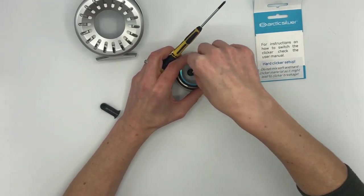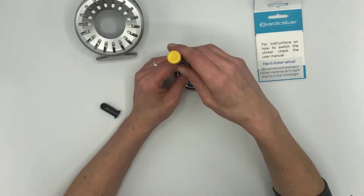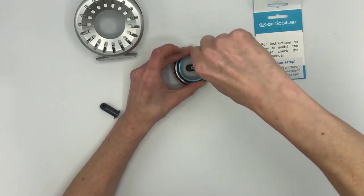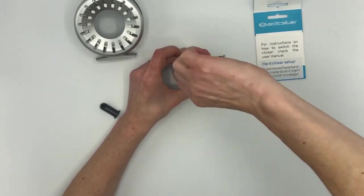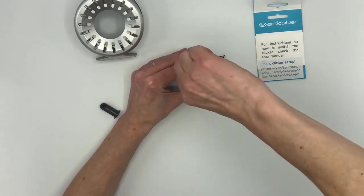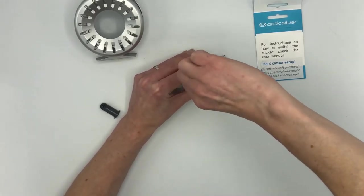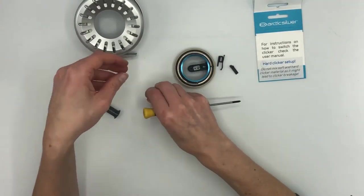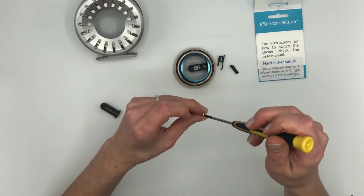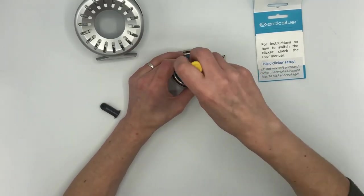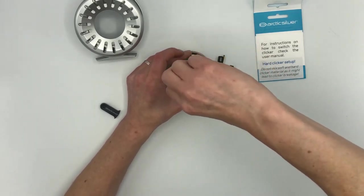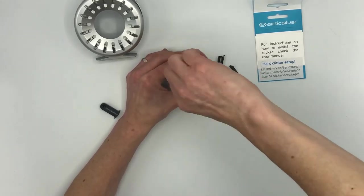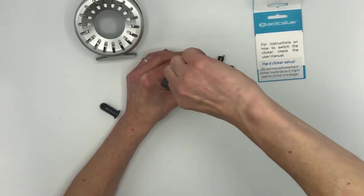Then just fasten those screws again. Really much easier if you take them out of this little hole here, but it works. Also make sure you tighten them really good and tight because they are holding the slider from the other side. If you don't fasten them tightly, there will be some movement and wobbling in the clicker slider, so always fasten screws tightly.